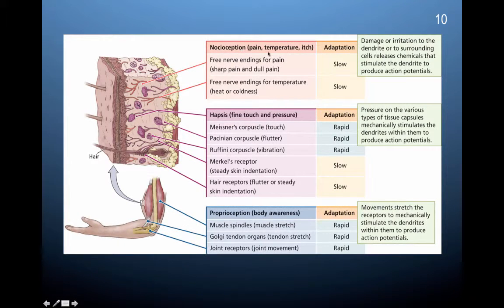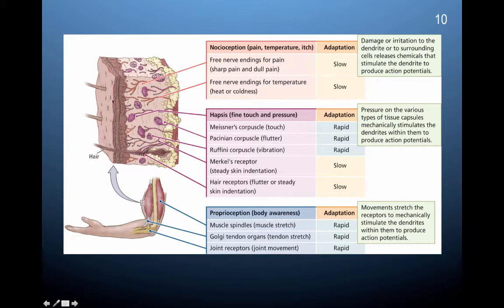For nociception — pain, temperature, and itch — free nerve endings detect sharp and dull pain, and are sensitive to excessive heat or excessive cold. Damage or irritation to the dendrite or surrounding skin cells — from being sliced, cut, or exposed to very cold or very hot temperatures — causes the release of chemicals that stimulate these nociception receptors to produce action potentials.